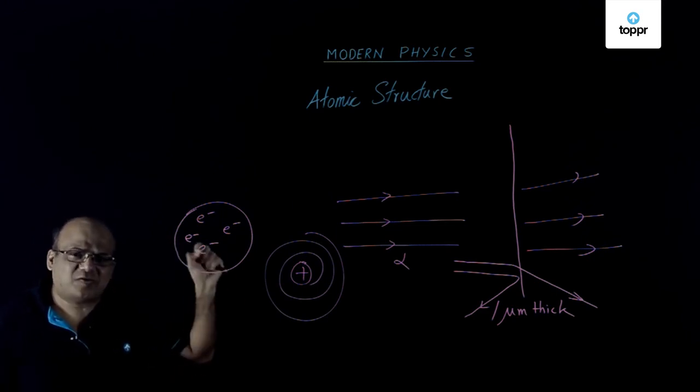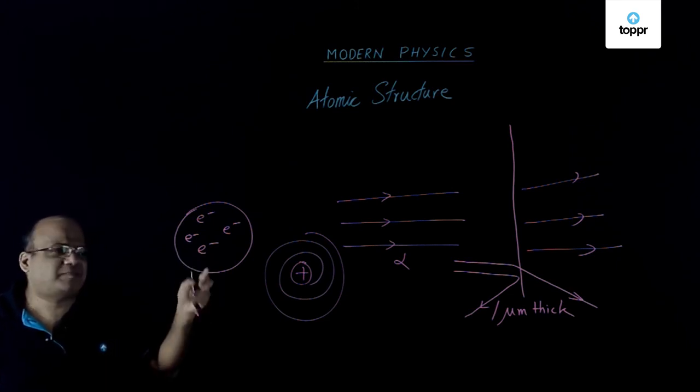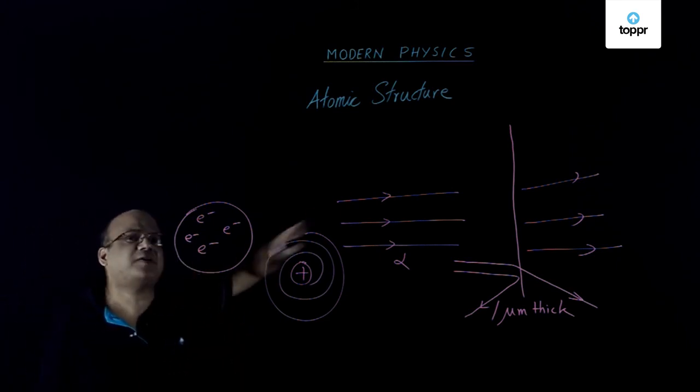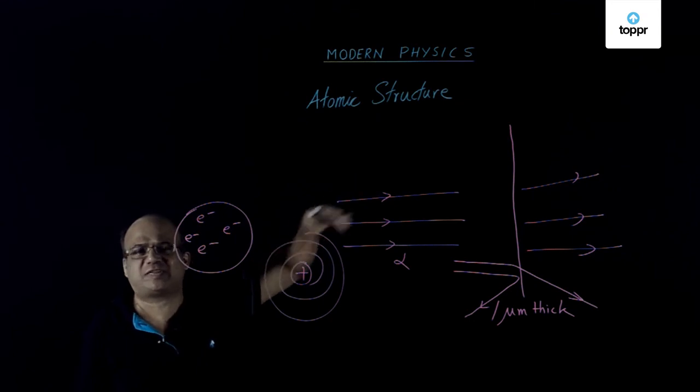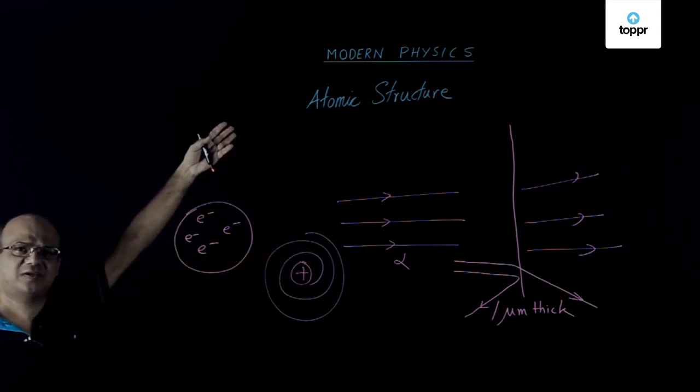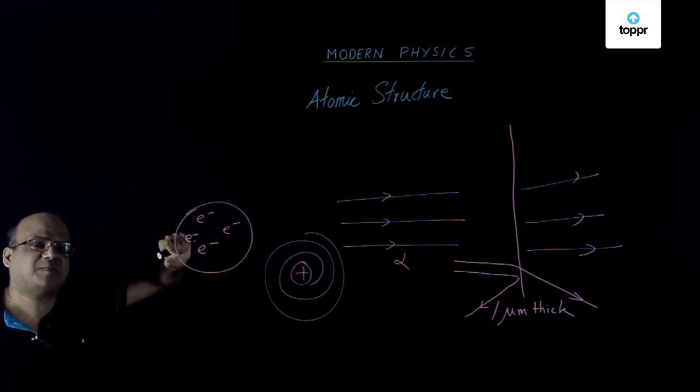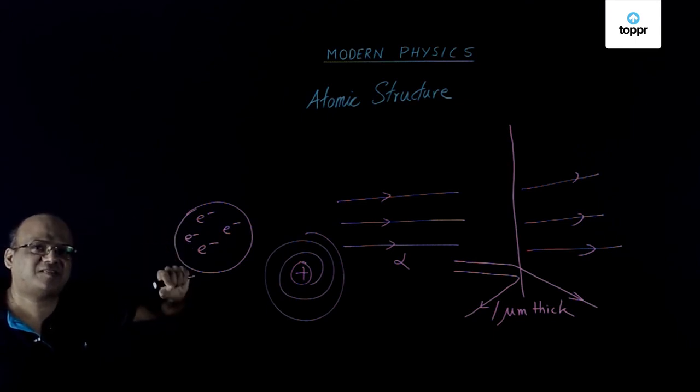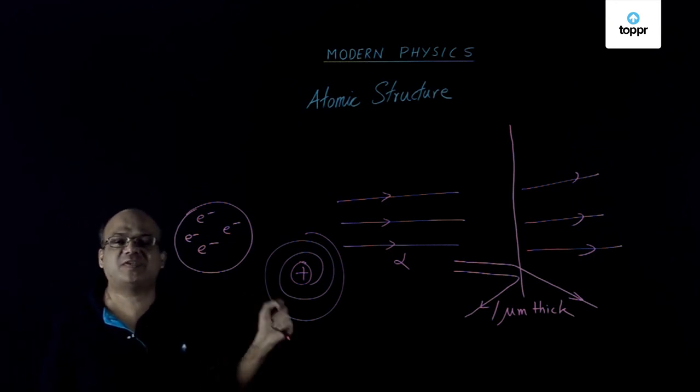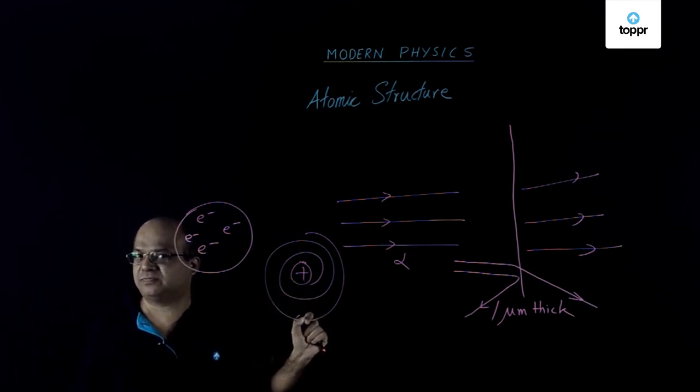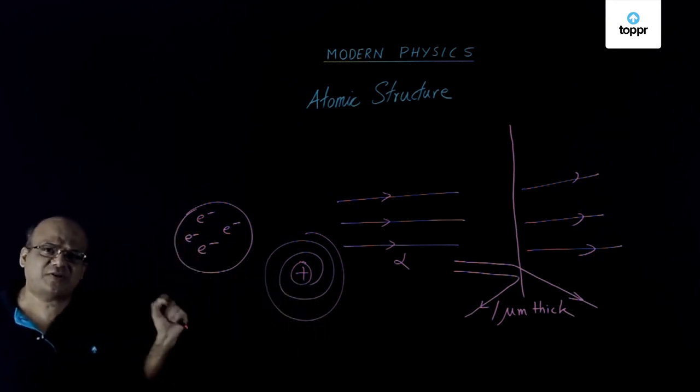The other thing that was wrong with this is that as per this model, the emission spectrum of hydrogen should be continuous. Because continuous radiation is coming out. But people knew the emission spectrum of hydrogen and that was discrete. It has got certain wavelengths that are emitted. That cannot be explained by using Rutherford's model. So that was the drawback of Rutherford's model.